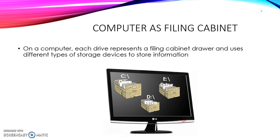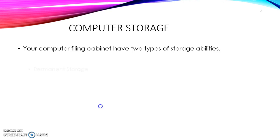Your computer filing cabinet has two types of storage abilities. The first is permanent storage, and the second one is temporary storage. Let's begin with permanent.